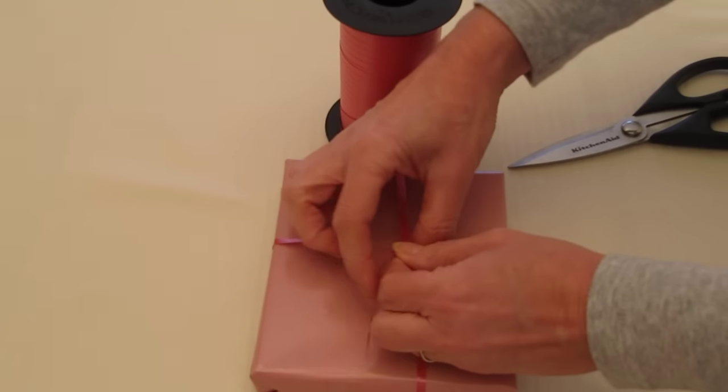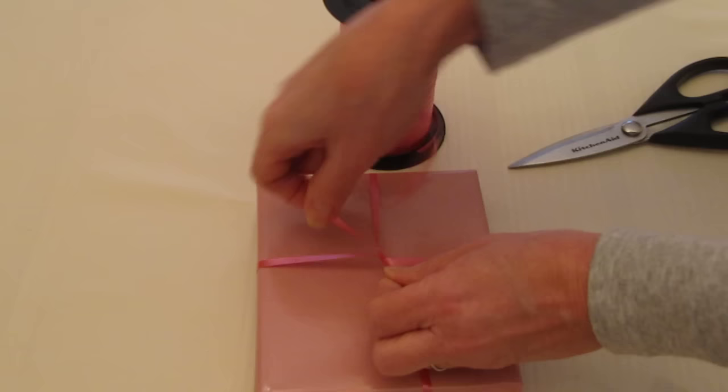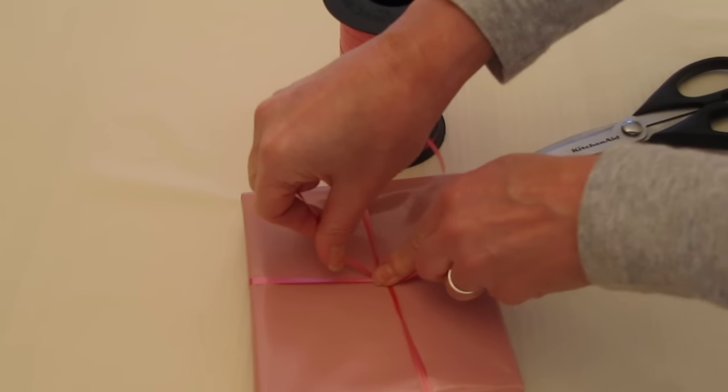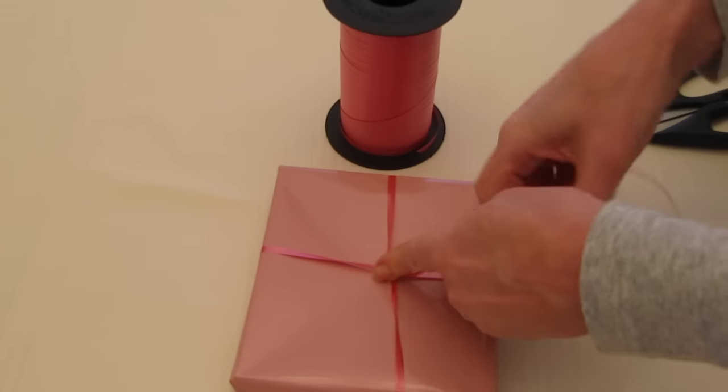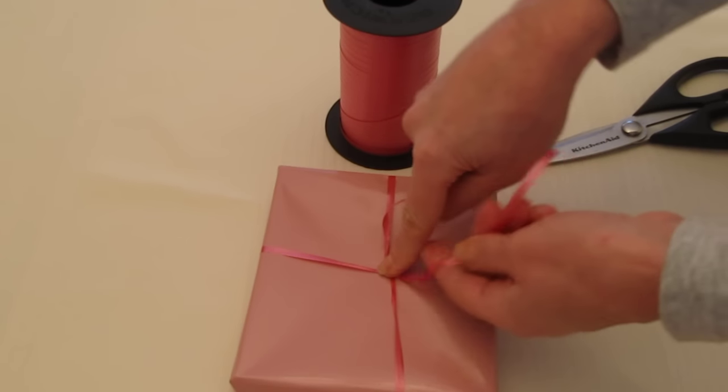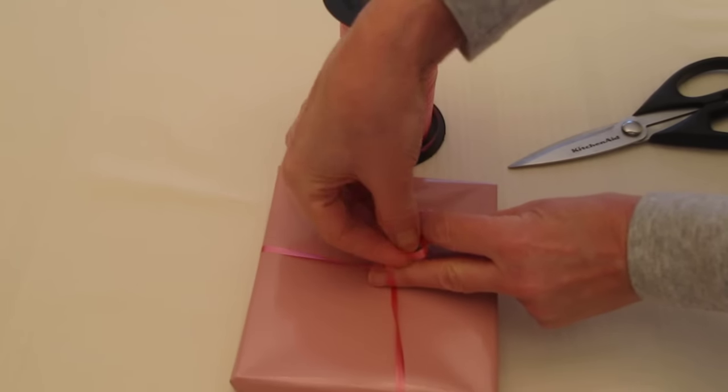Now we're going to take the ribbon and place it underneath, corner to corner on the ribbon. Use our finger to hold it there like that, and then we're going to tie the ribbon in a knot.